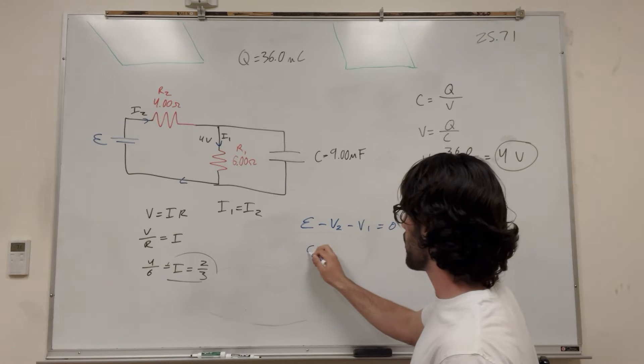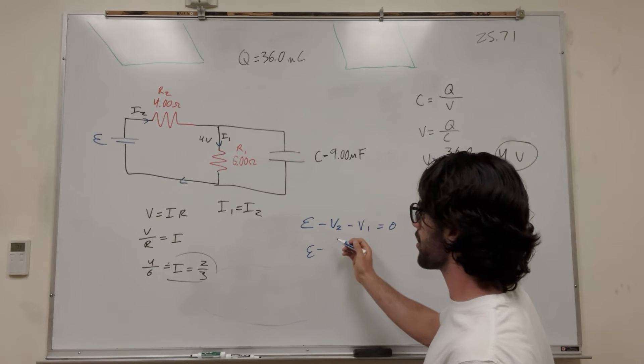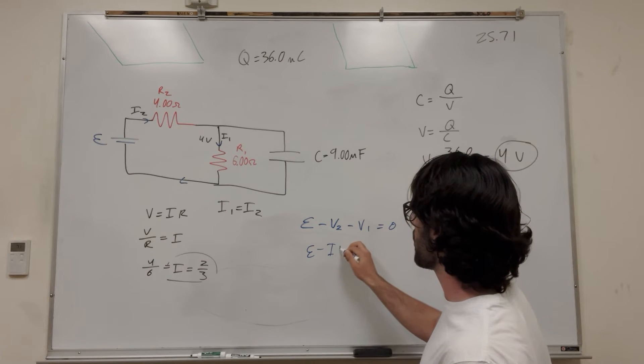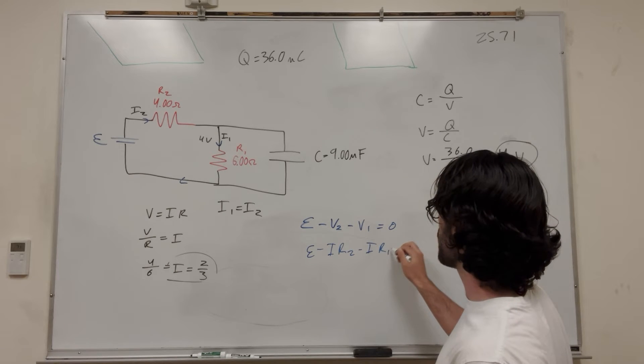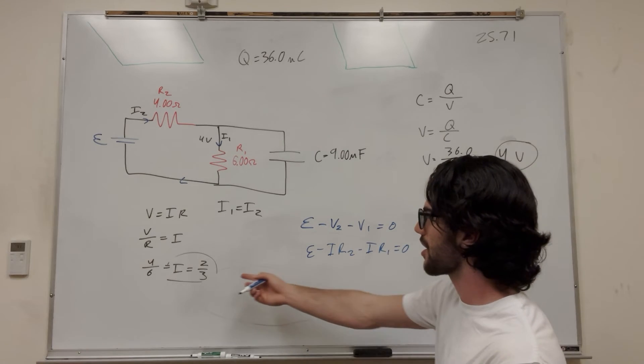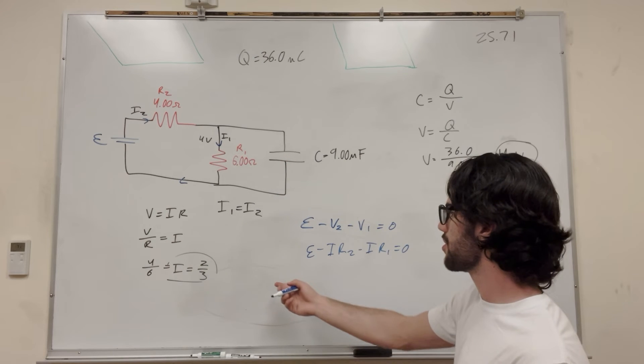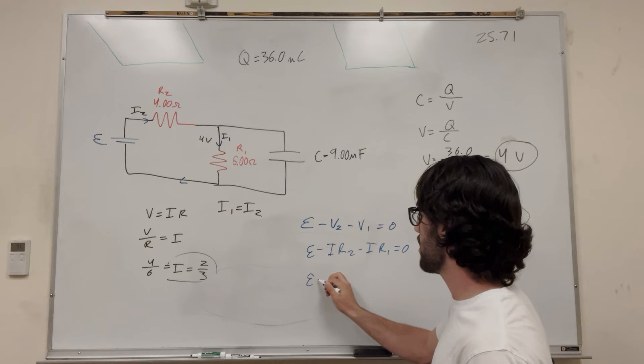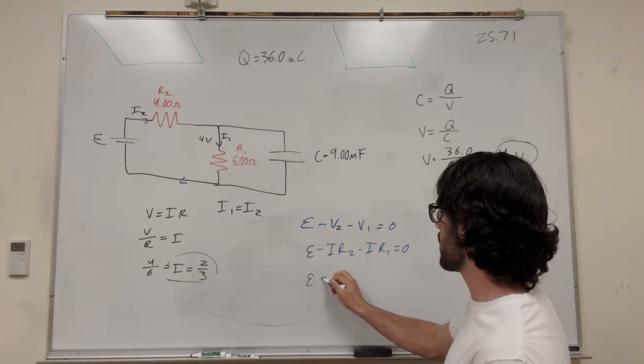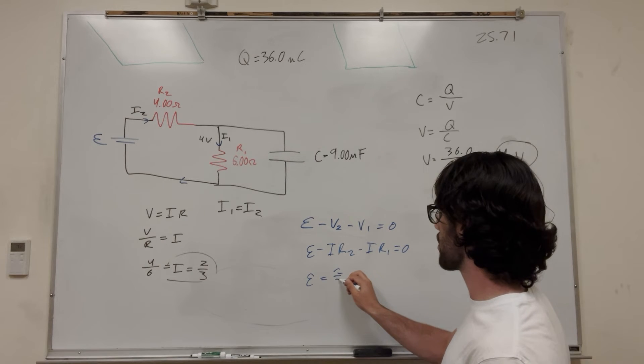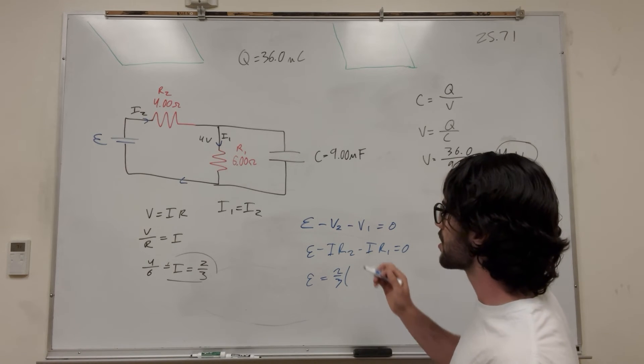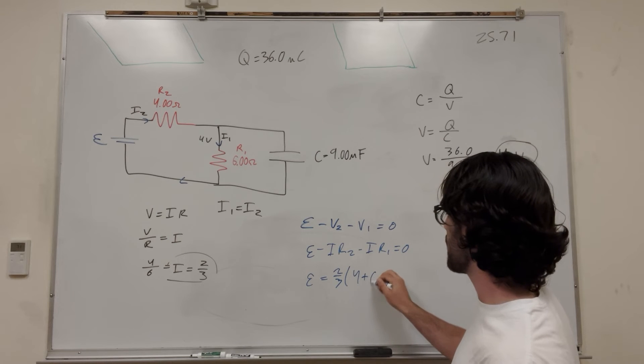So we can say EMF minus IR2 minus IR1 equals zero. The current in both of these is equal to two-thirds. So we can say E equals two-thirds times R2 plus R1, so it's going to be 4 plus 6.